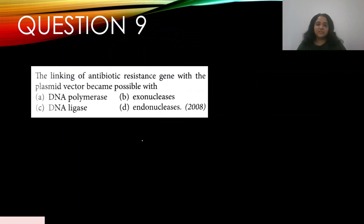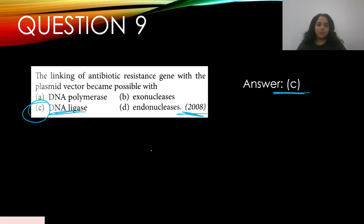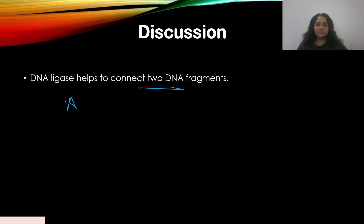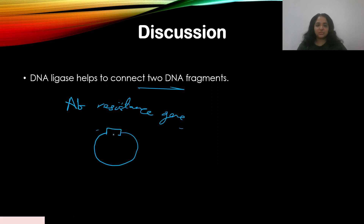Question 9: The linking of antibiotic-resistant gene with the plasmid vector became possible with — this appeared in 2008. Options: A — DNA polymerase, B — exonuclease, C — DNA ligase, D — endonuclease. The answer is C — DNA ligase. The antibiotic-resistant gene is a DNA fragment, and DNA ligase is used to connect it to the plasmid vector, joining the two DNA fragments together.